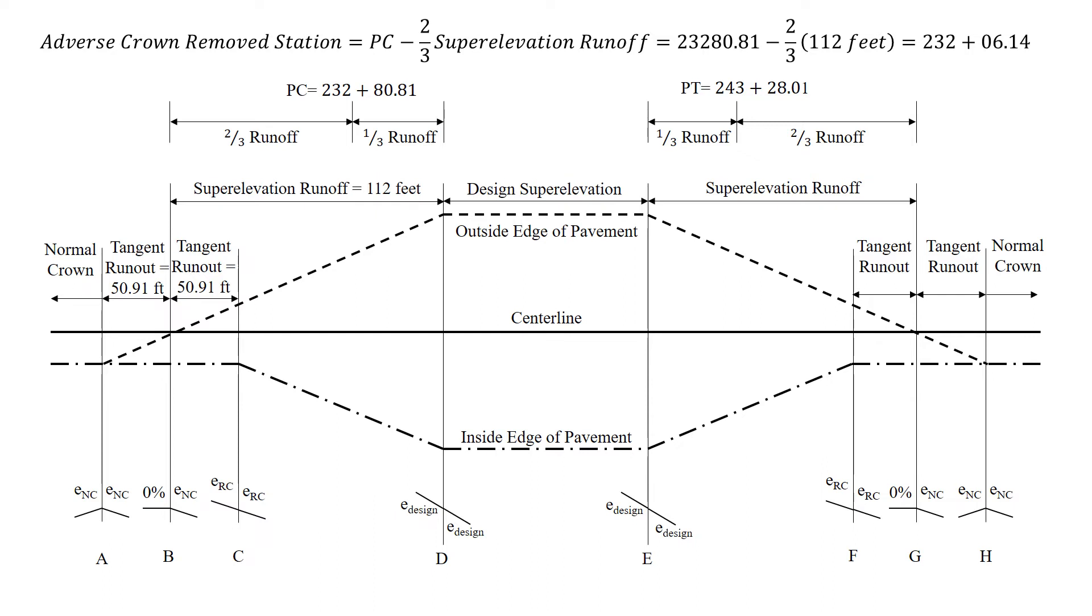So knowing where our point is, we're looking for station 232 for the cross slope. So we need to start focusing in on where exactly that's located relative to our other points. We can look for the adverse crown removed station, and that happens at the PC minus two thirds of the runoff. So that's station 232 plus 80.81 minus two thirds of 112 feet gives us a station of 232 plus 06.14. And again, that's where our adverse crown removed happens.